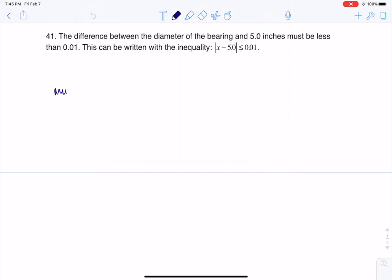You must be within 0.1 inches of a 5 inch diameter. So if you're making these bearings, and the bearings are supposed to be 5 inches in diameter, you don't want the bearing to be too small or too big, because then it won't fit into the part the way it's supposed to.